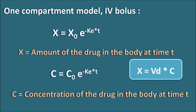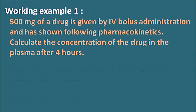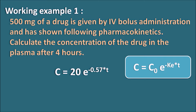Working Example 1: 500 mg of a drug is given by IV bolus administration with the following pharmacokinetics. Calculate the concentration of the drug in plasma after 4 hours. The equation given is C = 20 × e^(−0.57 × t). By comparing to C = C0 × e^(−KE × t), we can identify C0 = 20 μg/mL and KE = 0.57 hr⁻¹.